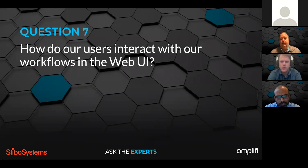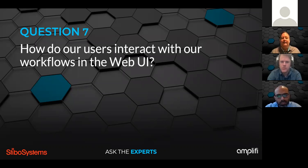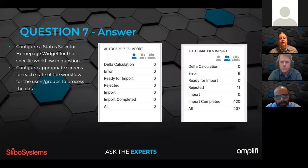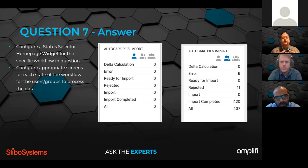A submitted question: how do users interact with workflows in the web UI? We use what's called a homepage widget with a status selector. Each status selector can be configured to look at a specific workflow and specific workflow states.